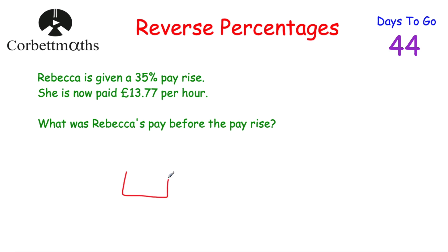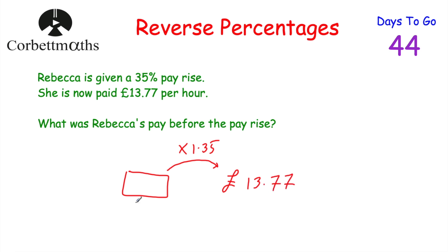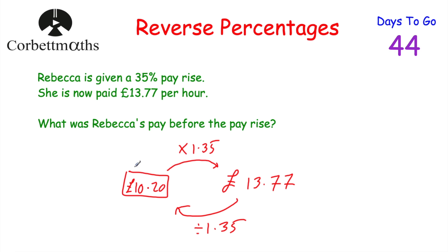Another approach is to use multipliers. Rebecca's pay to begin with is multiplied by the multiplier. If something goes up by 35%, you have 135%, so you multiply by 1.35. That gives us £13.77. To work backwards and find her original pay, we just divide by 1.35, which equals £10.20. So her pay before the pay rise was £10.20.